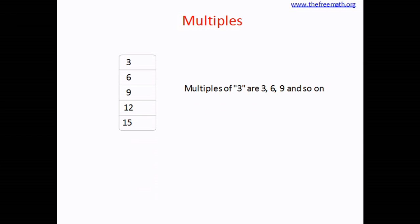Similarly, if you look at the table of 3, all the numbers in the table of 3 like 3, 6, 9, 12, 15 and so on are called multiples of the number 3.